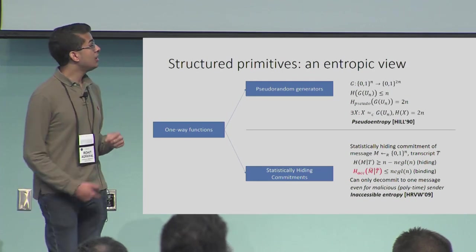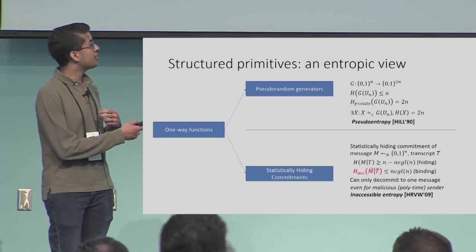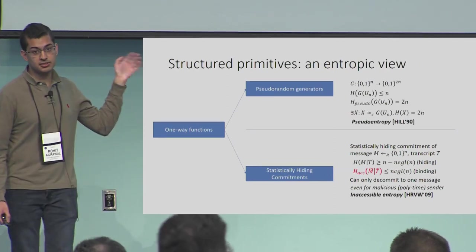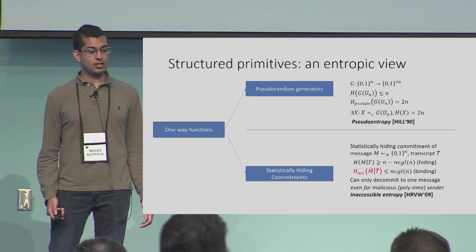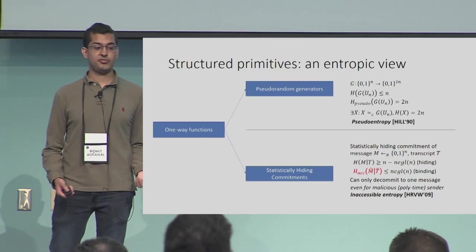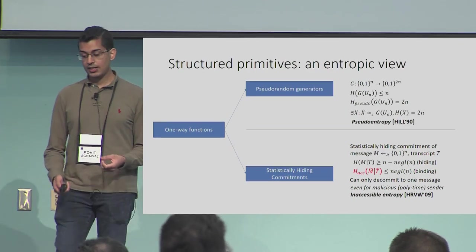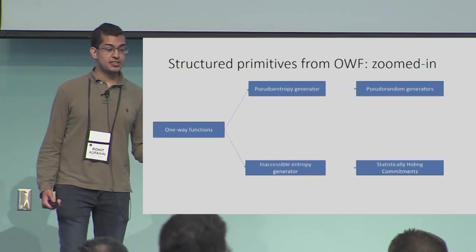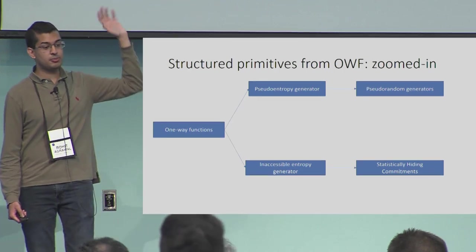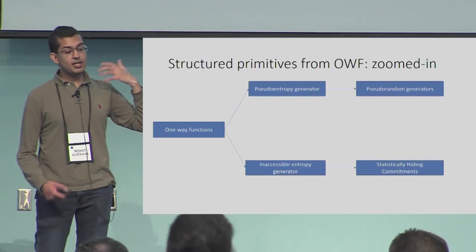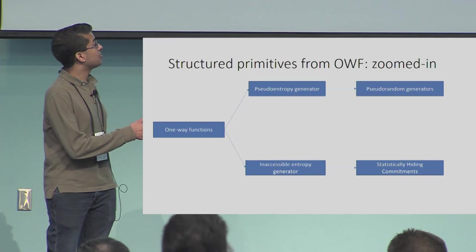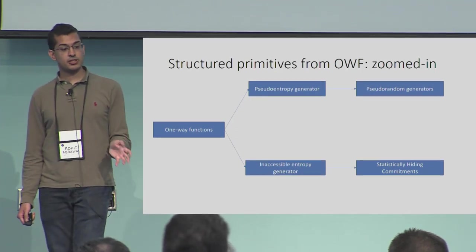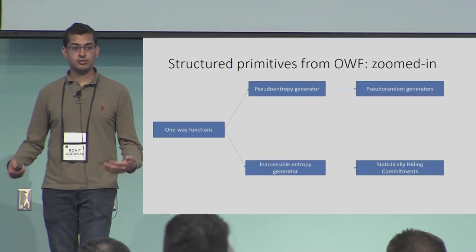Much like pseudo-entropy, we see that not only is the computational entropy much less than the true entropy — it is in fact zero or negligible. So this is an extreme form of inaccessible entropy. Motivating this, the way the best constructions work is they first produce some form of pseudo-entropy or inaccessible entropy that's not necessarily maximal, but has some gap between the computational entropy and the true entropy — these are pseudo-entropy generators and inaccessible entropy generators — and then you convert that into the full primitive.